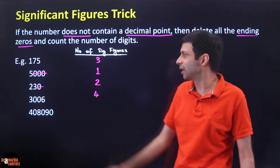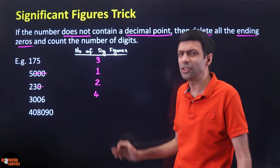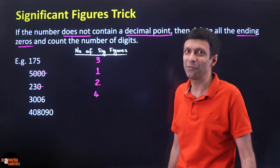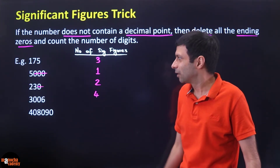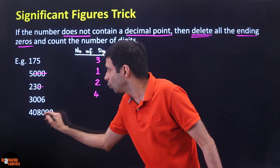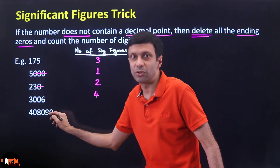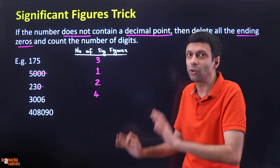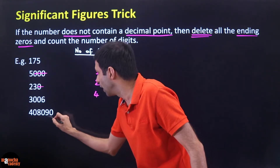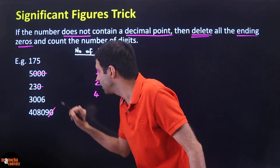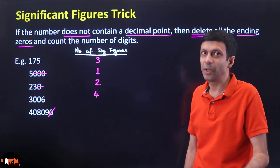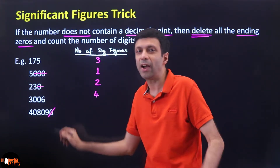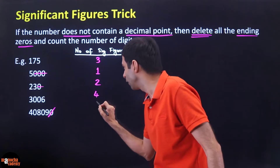What about 408090? Looks like a telephone number! How many significant figures here? Take care not to delete the middle zeros — only the zero at the end. I'm going to strike out that ending zero. How many digits are left? 1, 2, 3, 4, 5 — so 5 significant figures.